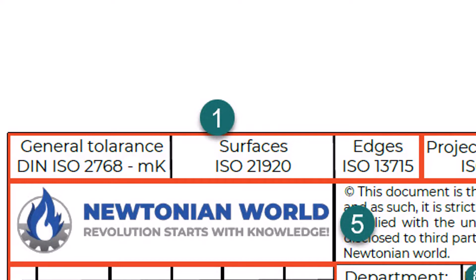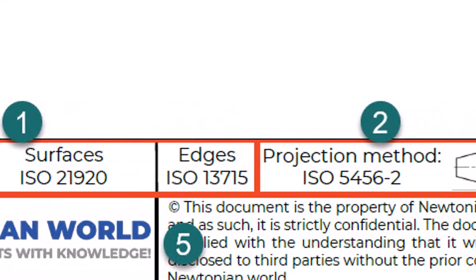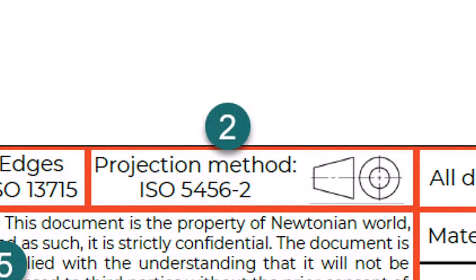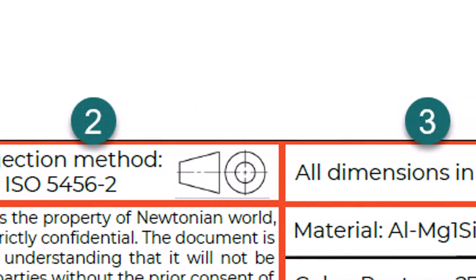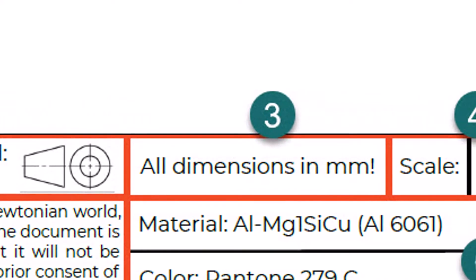Many different standards can be defined on the drawing. For example, you can define surface texture according to ISO 21920, or indication and dimensioning of undefined edges according to ISO 13715. Which standard you should put on your drawing depends on the industry and manufacturing process you are using. Projection Symbol: The projection symbols are defined by ISO 5456-2:1996. They describe what type of projection was used — first angle projection or third angle projection. Units: considering that we have international and imperial systems of units, it is desirable to define applicable units on the drawing.